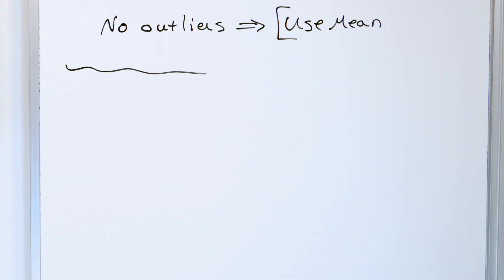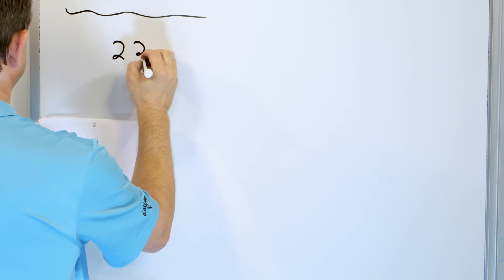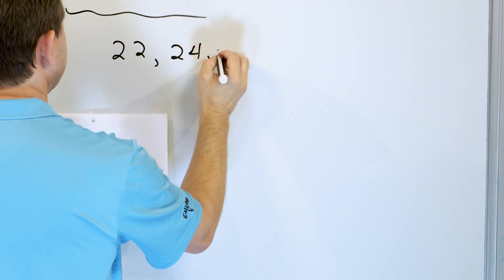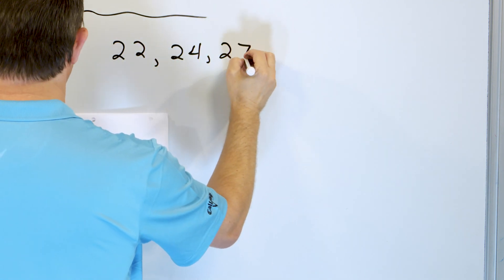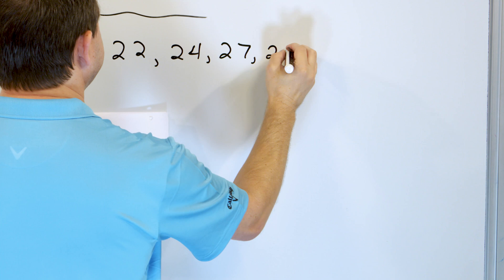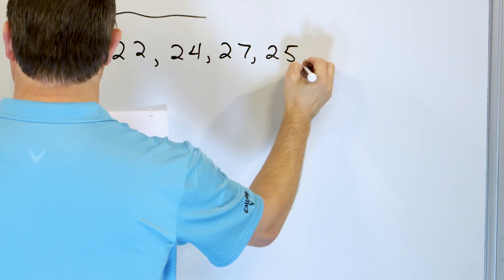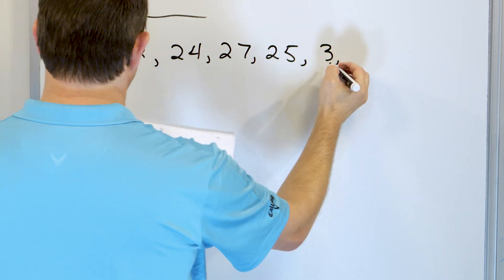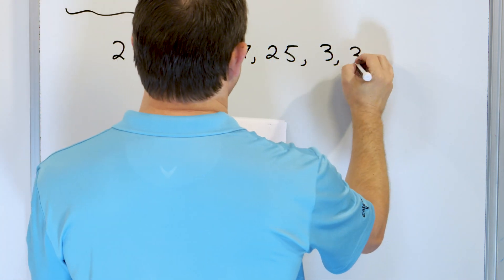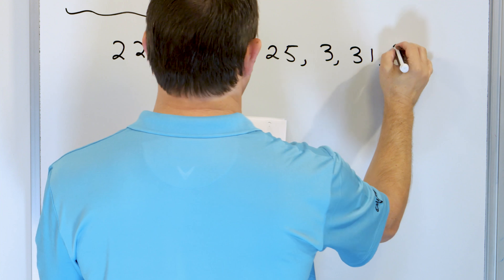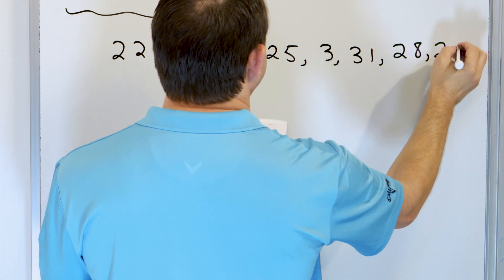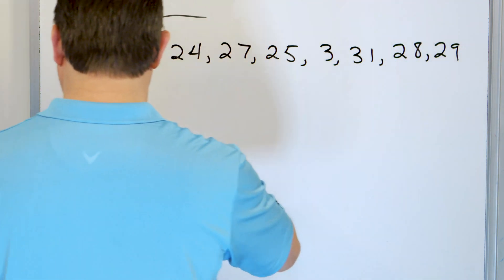Let's take a look at the next problem. Take a look at this data: 22, 24, 27, 25, 3, 31, 28, and 29. First, before you do anything, let's write down the data from least to greatest.